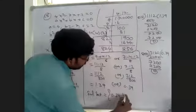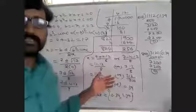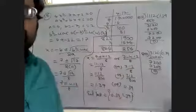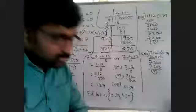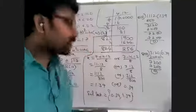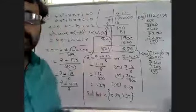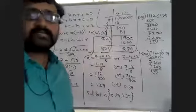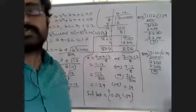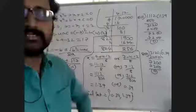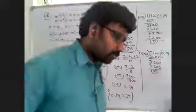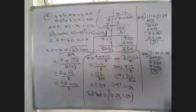So the solution set is equal to 0.39 comma 1.39. In previous questions also you have to find values like this up to two decimal places after the point. This is the last question in this exercise. We will start one more exercise tomorrow. Remember: only quadratic equations.